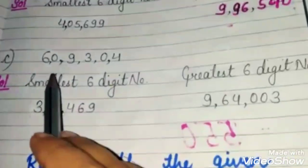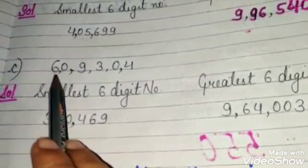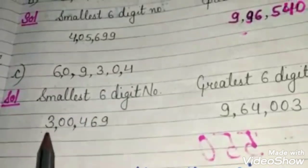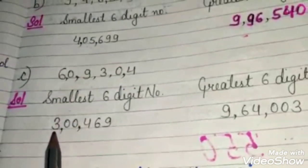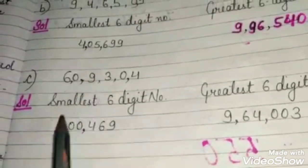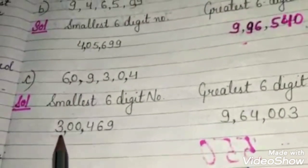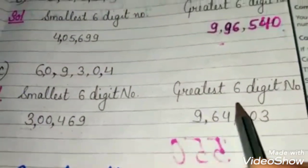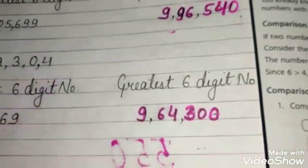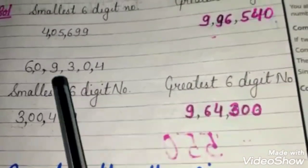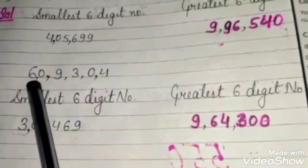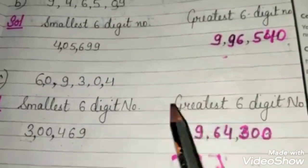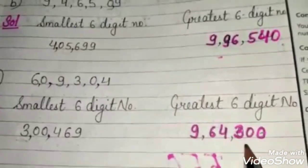Next question: digits are 6, 0, 9, 3, 0, 4. The smallest 6-digit number — we never start any number with 0, so we start from 3: 3, then 0, then 0, then 4, then 6, then 9. The greatest 6-digit number is: 9, then 6, then 4, then 3, then 0, then 0 — so the greatest 6-digit number is 9,64,300.